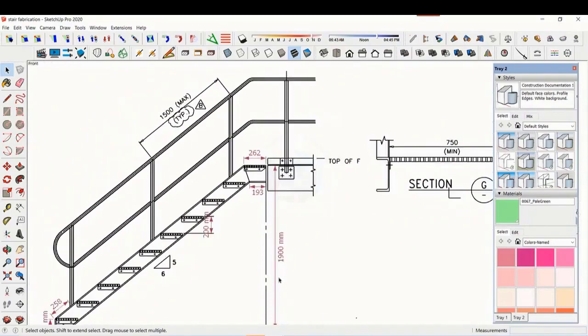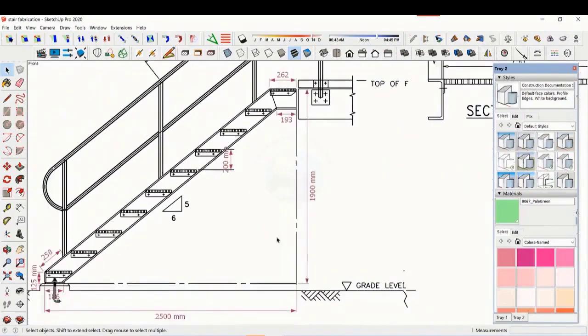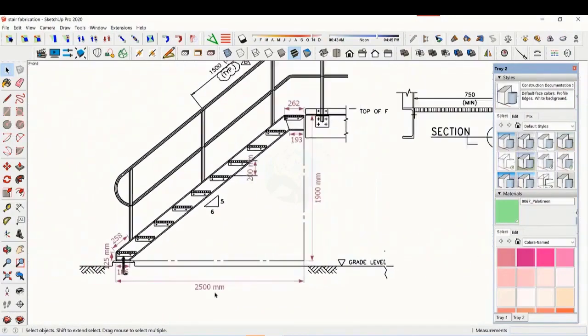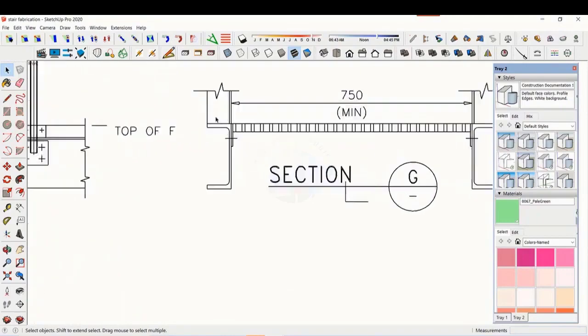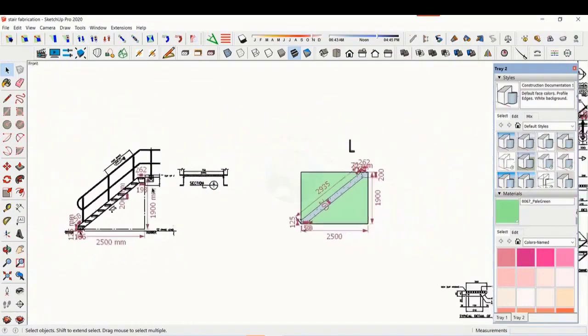The height of the staircase is 1900 millimeters and the length is 2500 millimeters. The width of the staircase is 750 millimeters. Let us see some other details.